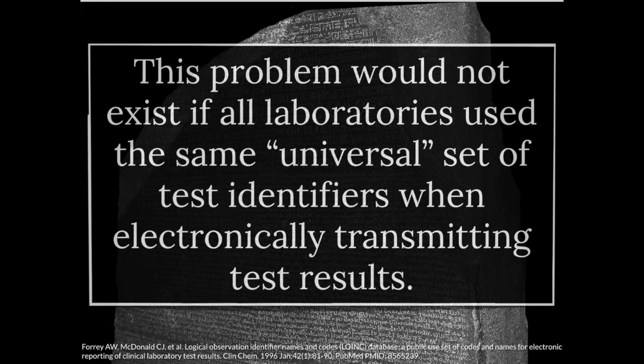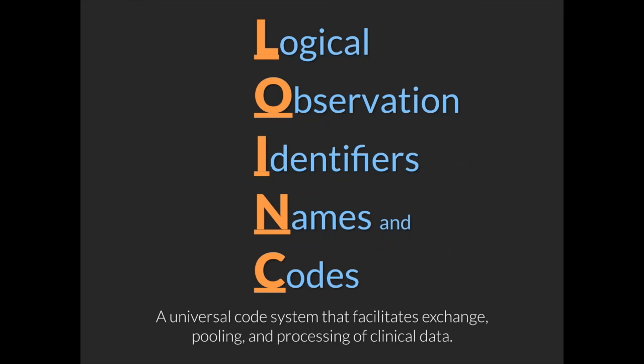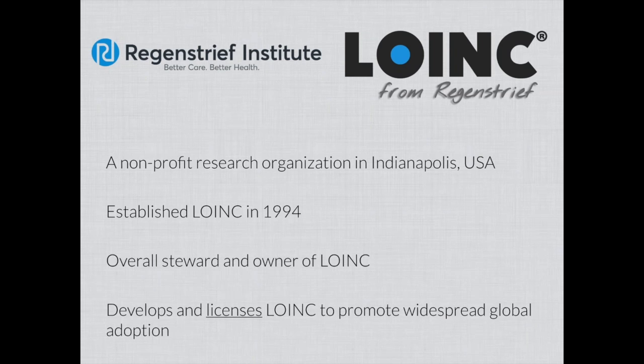LOINC stands for Logical Observation Identifiers Names and Codes. It is designed to be this universal code system facilitating exchange, pooling, and processing of clinical data. It's organized and developed by the Regenstrief Institute, a nonprofit research organization in Indianapolis, USA. The LOINC work was initiated back in 1994, and since then Regenstrief has served as the overall steward and owner of LOINC — developing it and licensing it in a way that tries to promote widespread global adoption so it can fulfill the ideal of being a universal language.